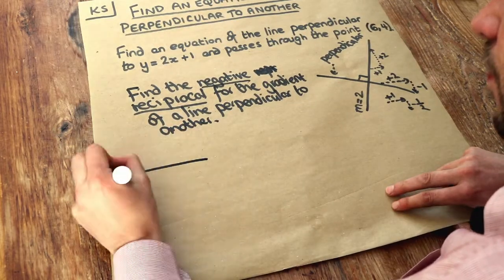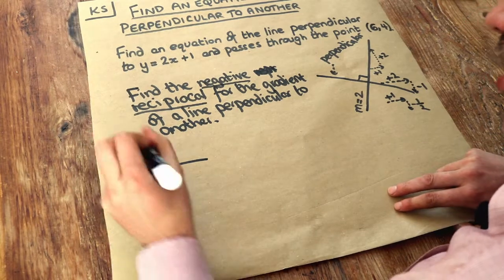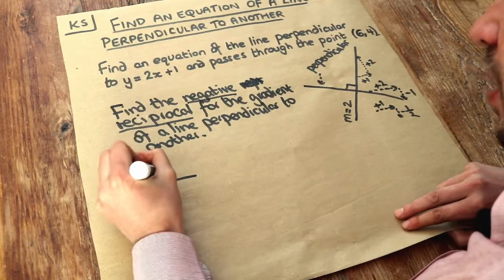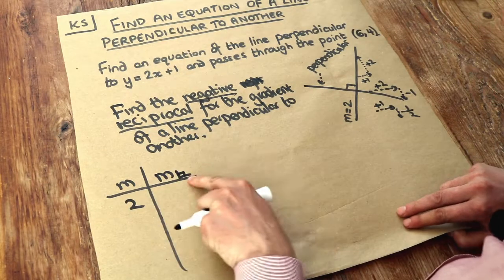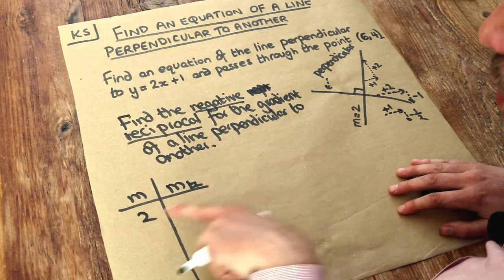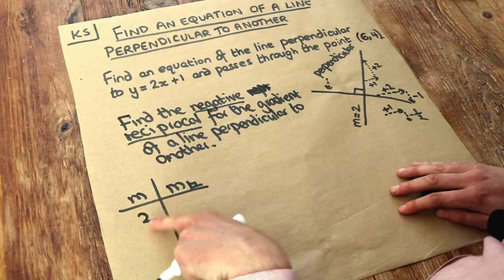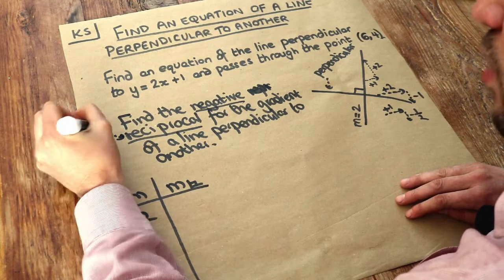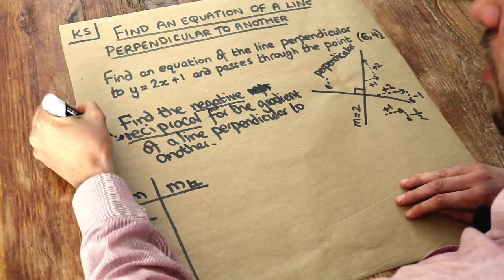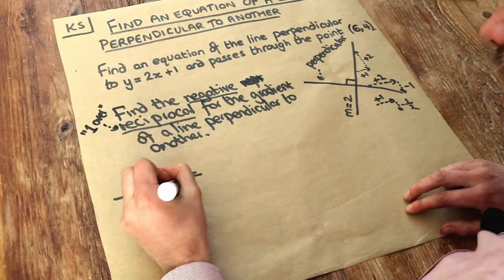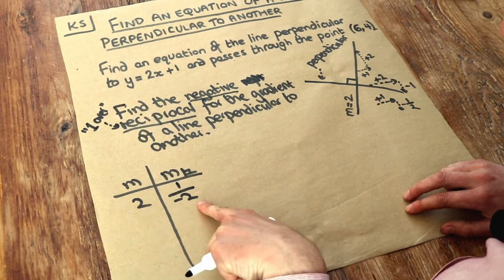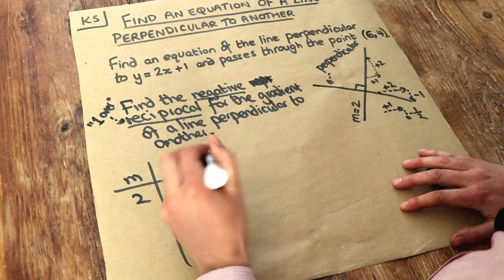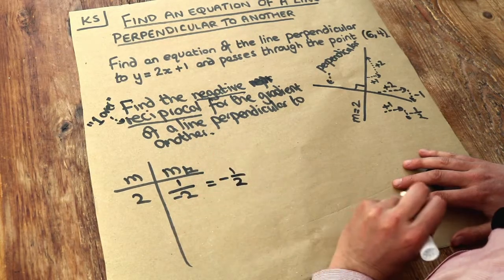So let's give some examples. If the gradient of the original line was 2, then what would be the gradient of the line perpendicular to it? Well negative reciprocal means we first do negative of that so the 2 becomes minus 2, and reciprocal means 1 over. So reciprocal of a number means 1 over it. So we do 1 over negative 2. So we first turn the 2 into minus 2, the negative of it, and then we do the reciprocal of that, 1 over it. And rather than 1 over minus 2, I like to write the minus on the front, so it'd be negative a half.